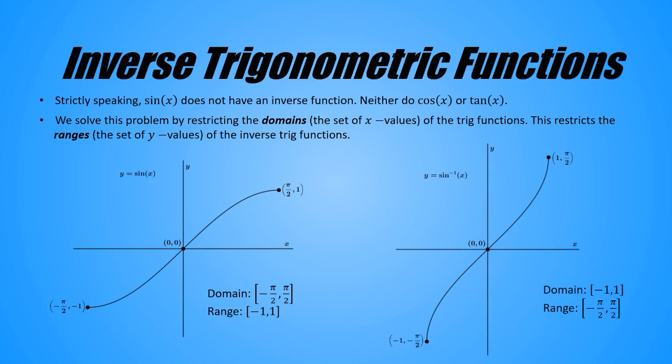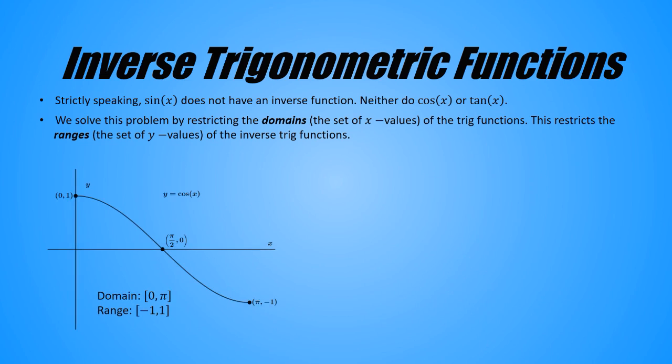That way, we get an inverse sine that's a proper function. Here's how we restrict the cosine function so that we can define its inverse. We cut off the domain to the interval zero to pi. And here's the inverse cosine.